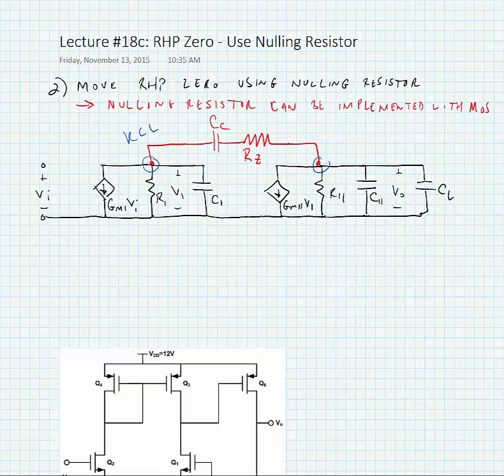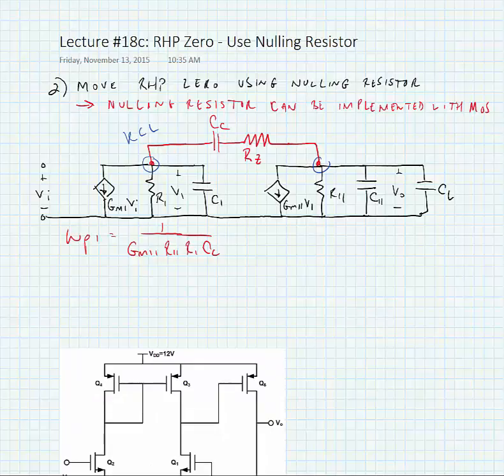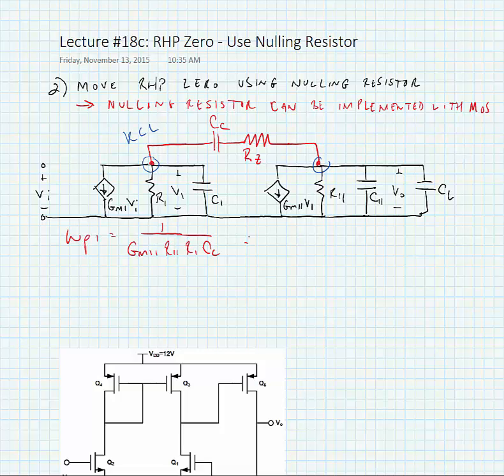After we place this nulling resistor, we still see the same dominant pole omega P1 is equal to 1 over GM2 R2 R1 CC. We have the same second pole frequency omega P2 which is equal to GM2 divided by CL.